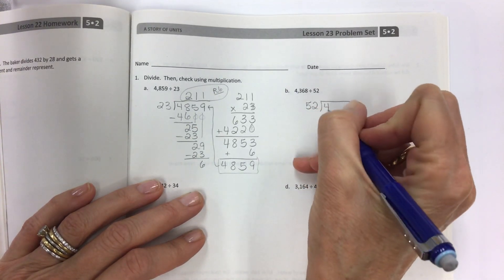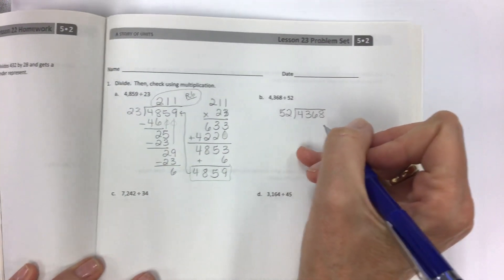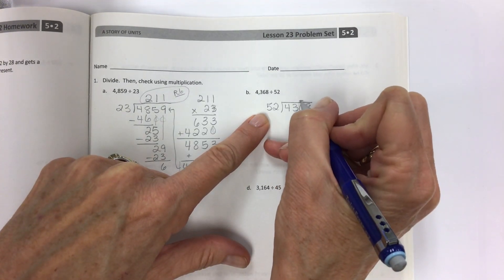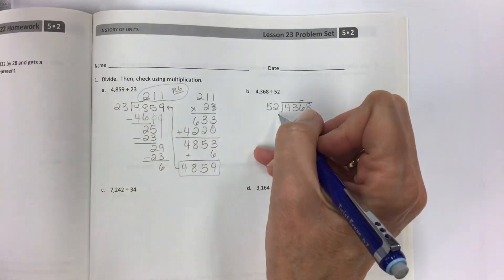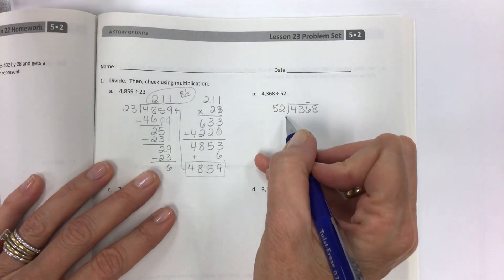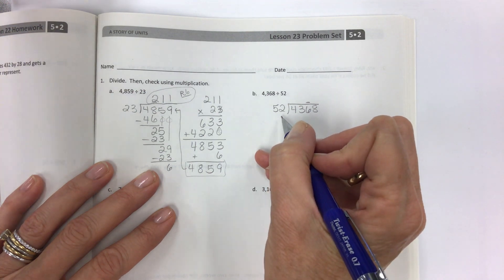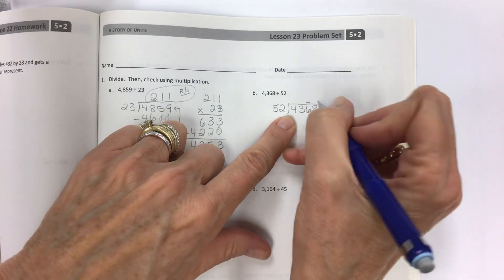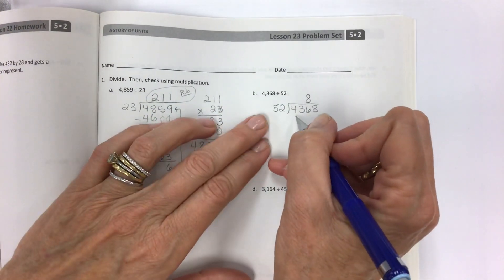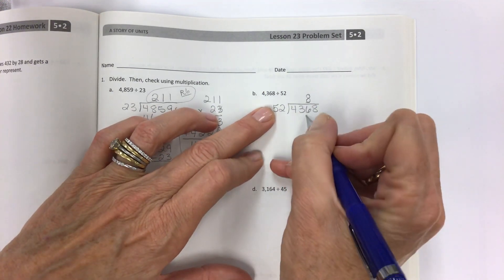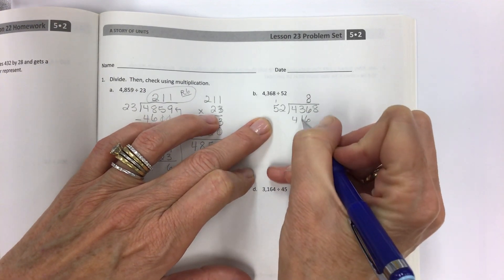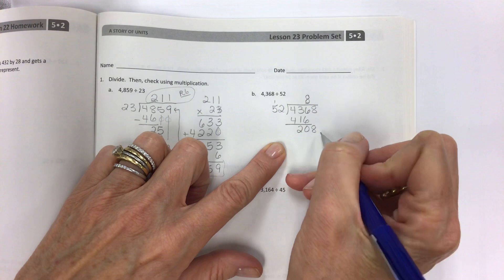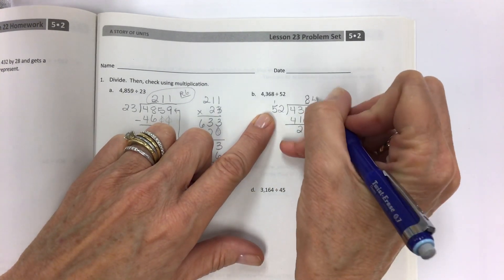52 is our divisor and 4,368 is our dividend. Starting from the left, I cannot fit 52 into 43, so my first digit in the quotient will be in the tens place. If I had 50, I could round this to 400, and I could try for 8. 8 times 2 is 16. 8 times 5 is 40, plus 1 is 41. Do your subtraction. Compare and make sure that this is less. And it is, so we can bring down the 8.